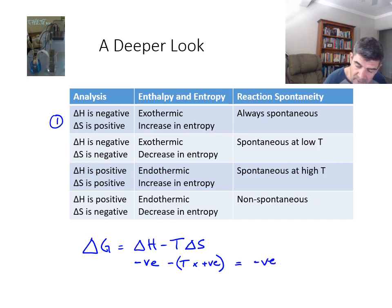And so therefore, these ones, because the delta G is always negative, they must be always spontaneous.